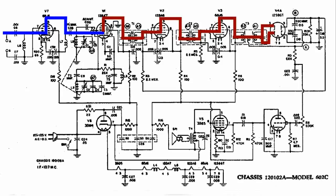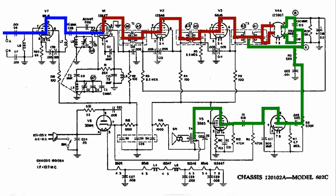After it gets detected, we have our audio signal here, and we can see that from the detector, it goes down to the other part of the 12S8GT, and then over to the 35B5 audio output tube, and then to the speaker.